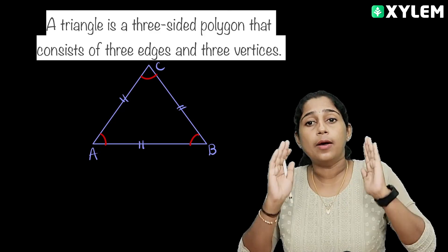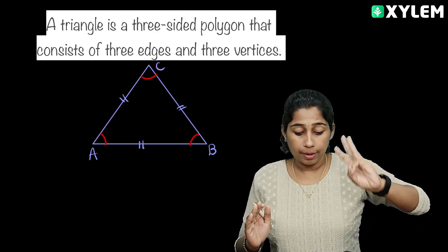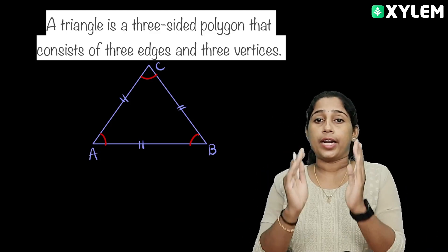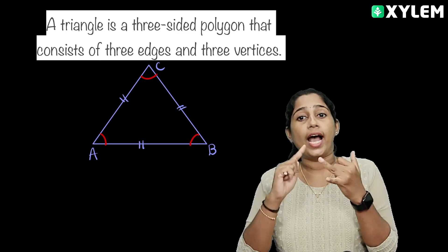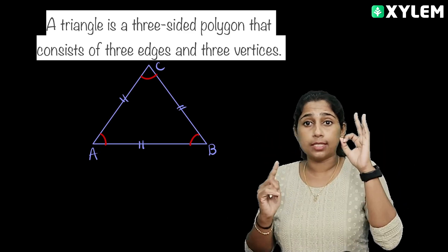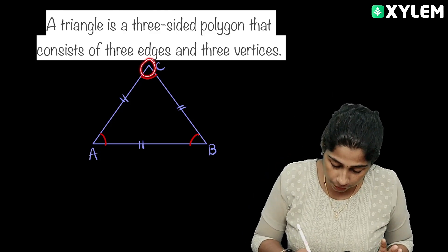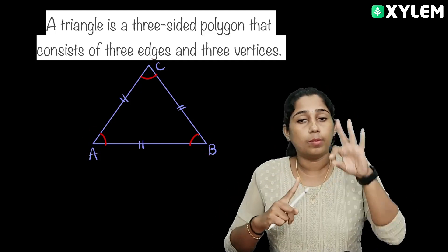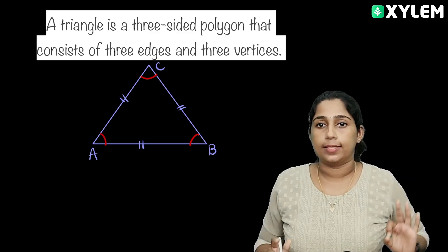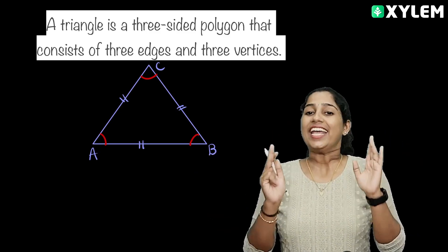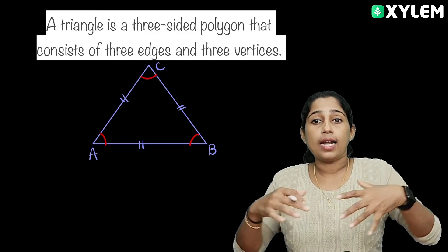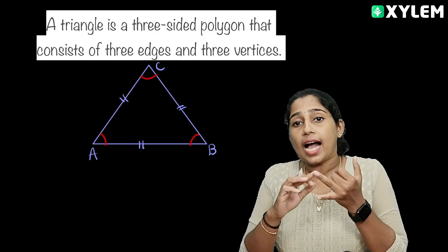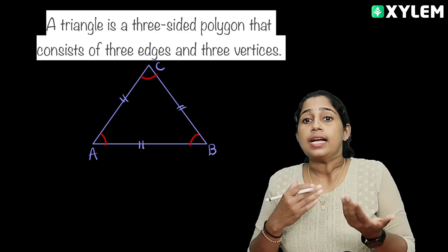The triangle is made up of three sides, three angles, and three vertices. If you have a question, the vertices are A, B, C — where two edges meet. Three vertices, three sides, three angles. Now, let's classify the triangle.